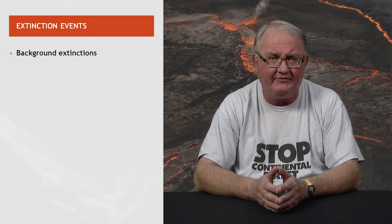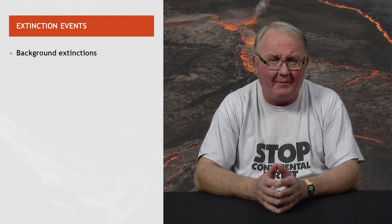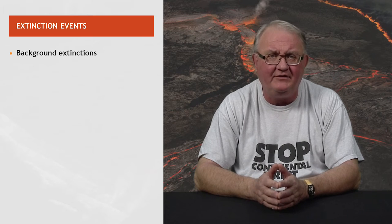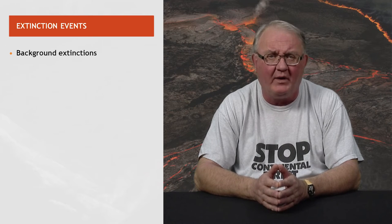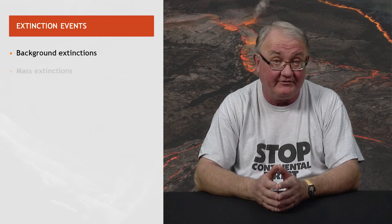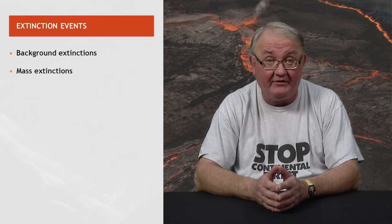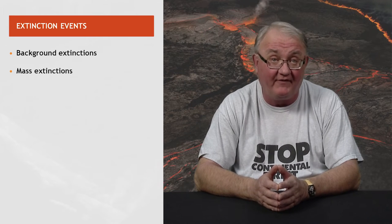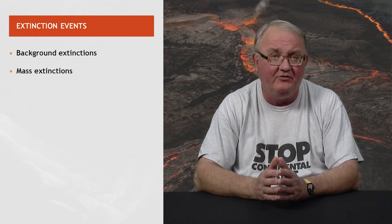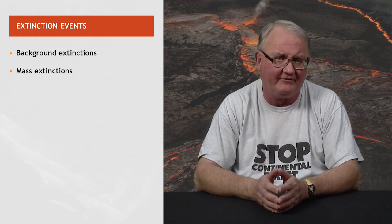Background extinctions are local in nature, happening continuously, and lead to the demise of one or a few taxa. Mass extinctions are episodic, geologically fast, global in extent, and affect numerous taxa.